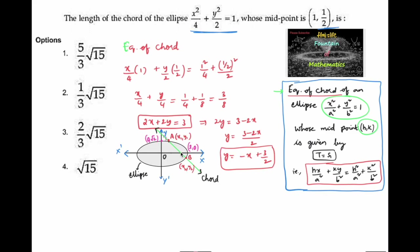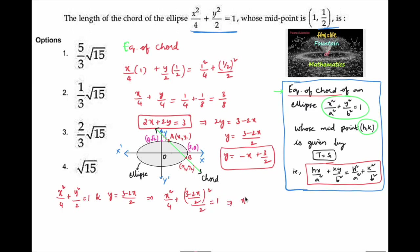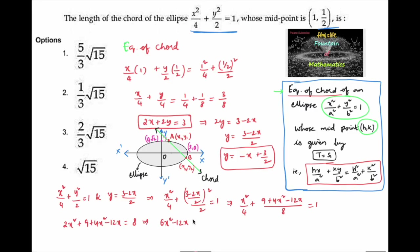Now to get the length of chord AB, we solve x²/4 + y²/2 = 1 with y = (3 - 2x)/2. Substituting: x²/4 + (3 - 2x)²/8 = 1, simplifying gives 2x² + 9 + 4x² - 12x = 8, which gives 6x² - 12x + 1 = 0.